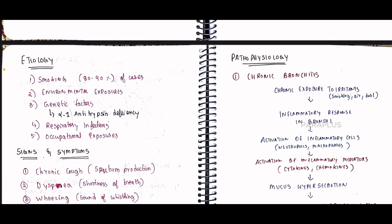Genetic factors include alpha-1 antitrypsin deficiency — this deficiency can cause COPD. Respiratory infections and occupational exposure — such as working in a chemical or gas factory — are also risk factors.